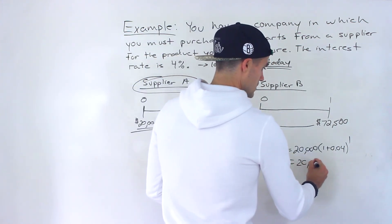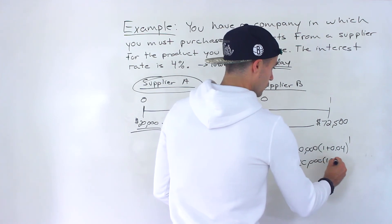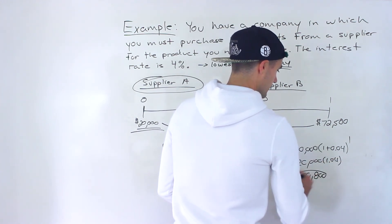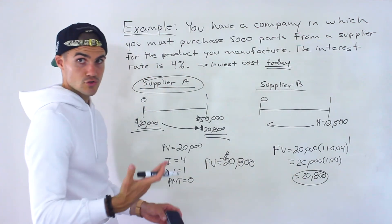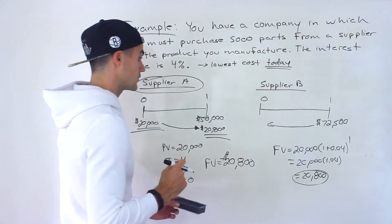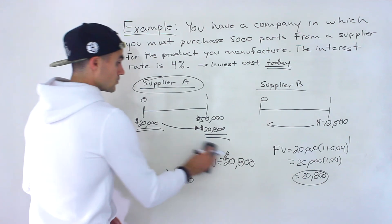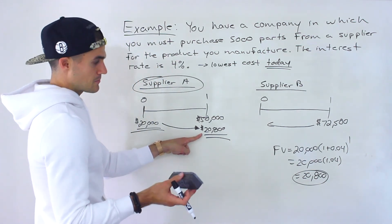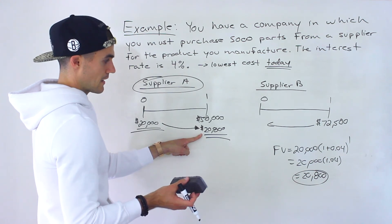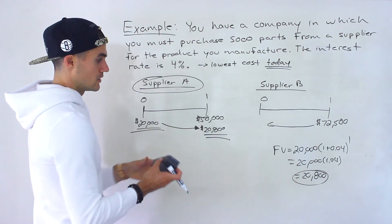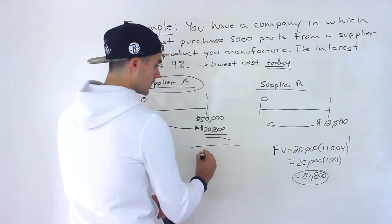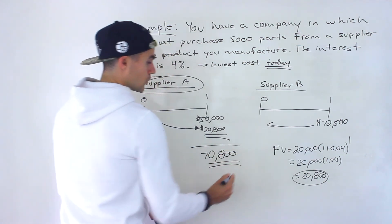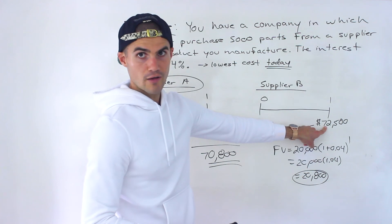You can verify this manually: $20,000 times 1.04 gives you $20,800. So whichever way you calculate the future value — with the calculator or manually — your total cost in one year is going to be $70,800, which is lower than the $72,500 you'd pay with supplier B.